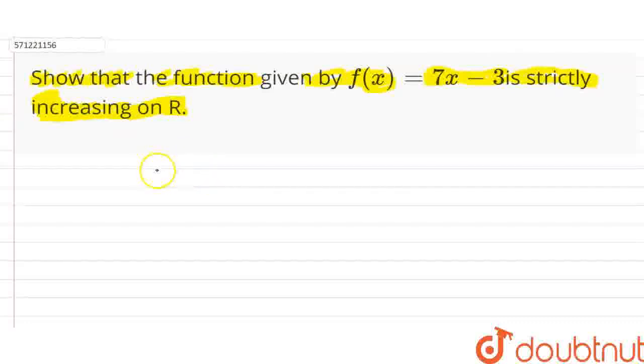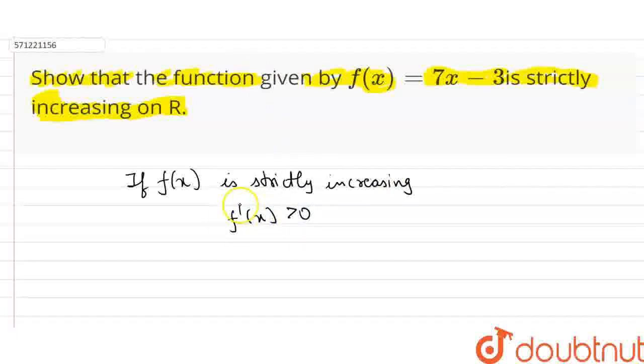We know that for any function, if f(x) is strictly increasing, then f'(x) is greater than 0. This is the condition for strictly increasing of a function. f'(x), that means its differentiation with respect to x, is greater than 0.